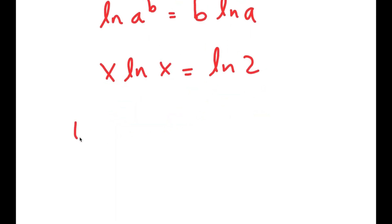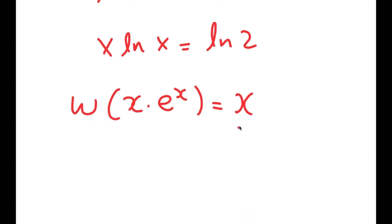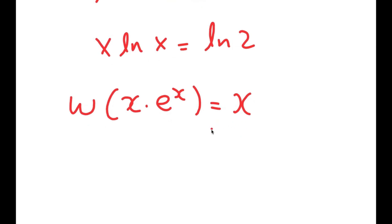Now I'm going to be using the Lambert W function, which states that if I take the W of something in the form x times e to the power of x, this is equal to x. So we're going to want to put this in the form x times e to the power of x, so then I can use the Lambert W function to simplify this.